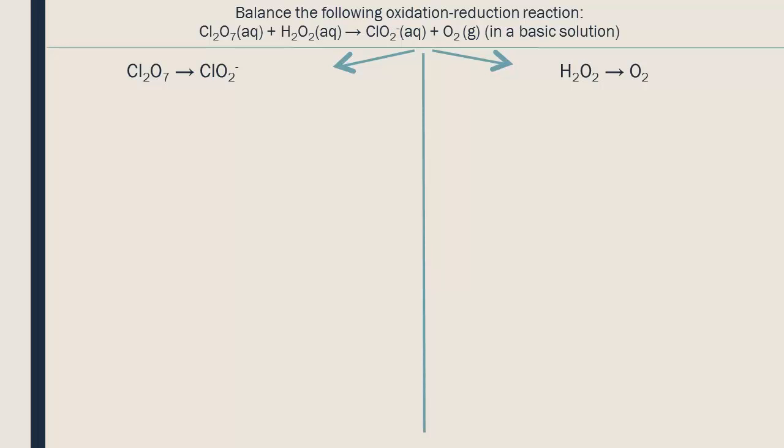We will balance the first half-reaction on the left. We start by balancing the elements other than oxygen and hydrogen. There are two chlorine atoms on the left side and only one on the right, so we double the product. Now we balance the oxygens by adding water molecules. There are seven oxygens on the left and only four on the right, so we add three H2O's to the right side.